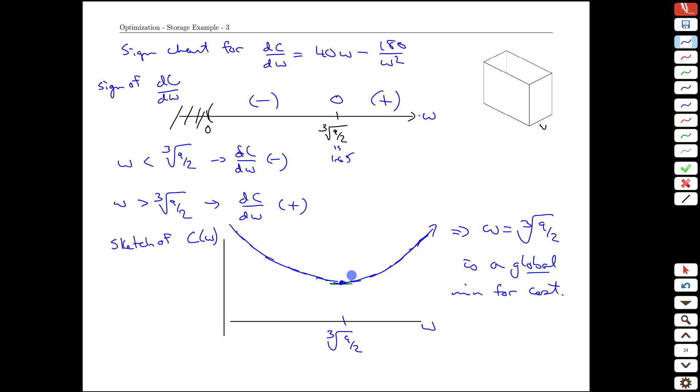And now the only thing that remains to be done is to say, well, what is that cost and what are the dimensions? So the final result here, we'd have w equals around 1.65. The other side was two w's. That would be around 3.3 meters.